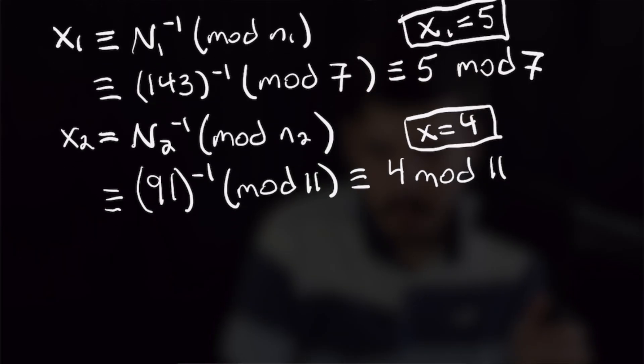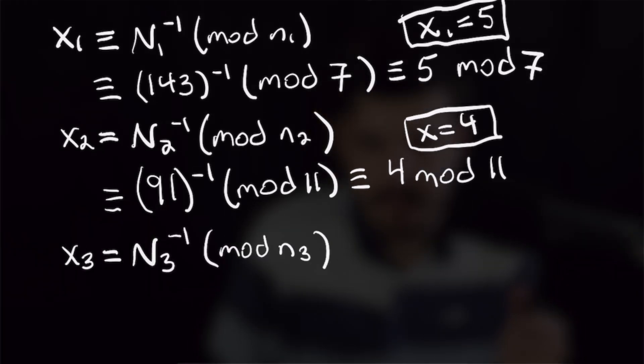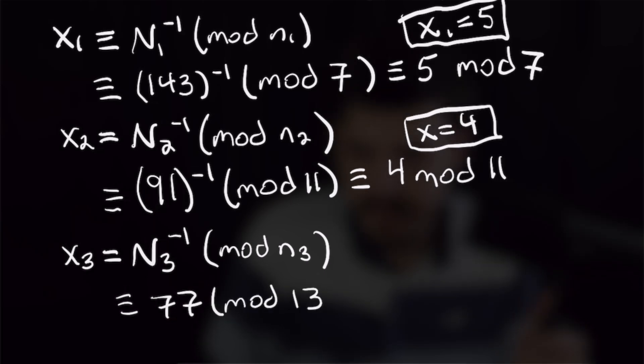And lastly, for our x sub 3, we will have big n sub 3 inverse mod little n sub 3, which is 77 inverse mod 13, and 77 inverse mod 13 is in fact 12. So we have that as our value for x3.